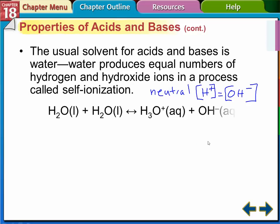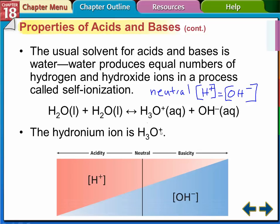Water is a neutral solution — it produces equal numbers of hydrogen and hydroxide ions; the concentrations are equal. This is the ionization equation for water. The hydronium ion is H3O-plus. It's called a hydronium ion.